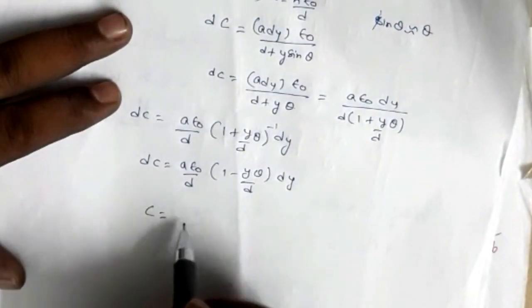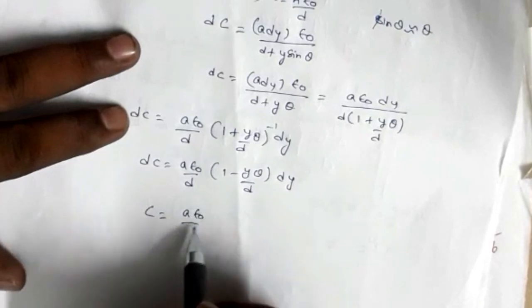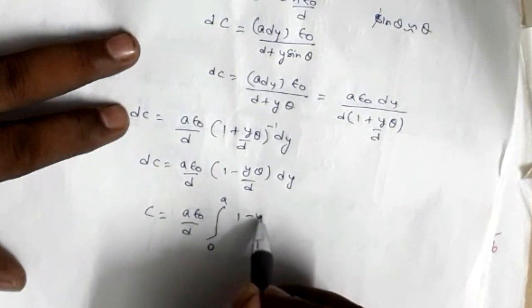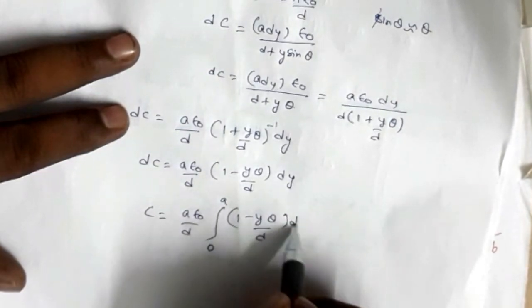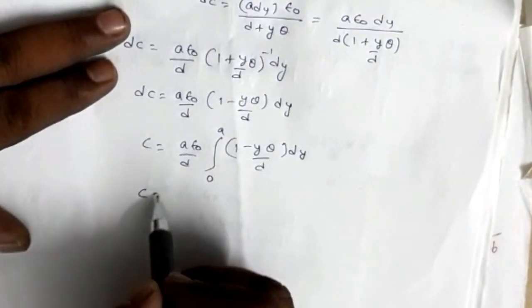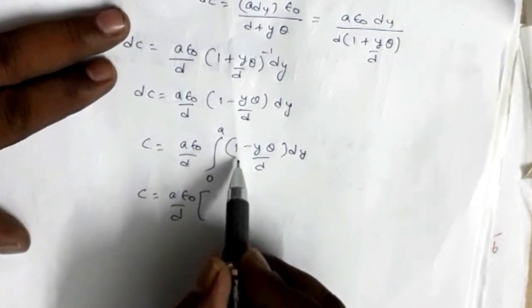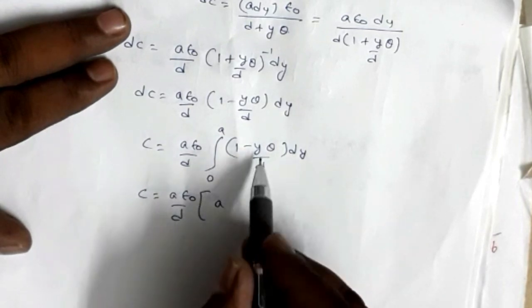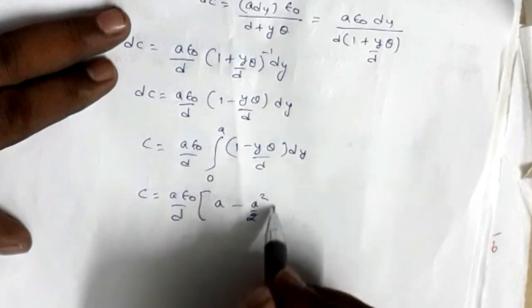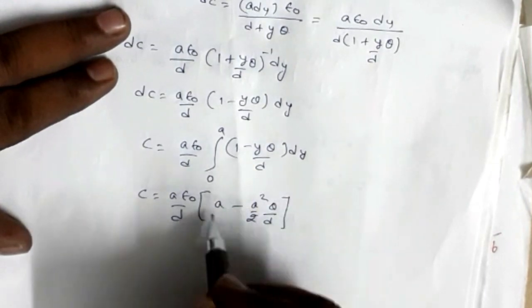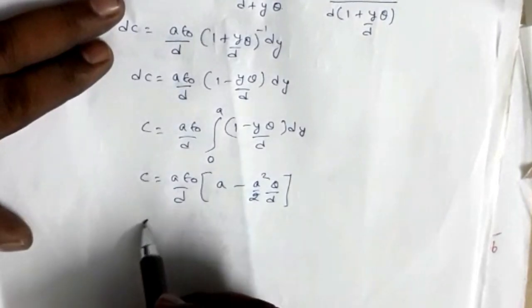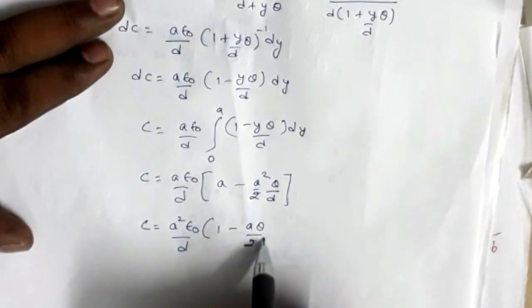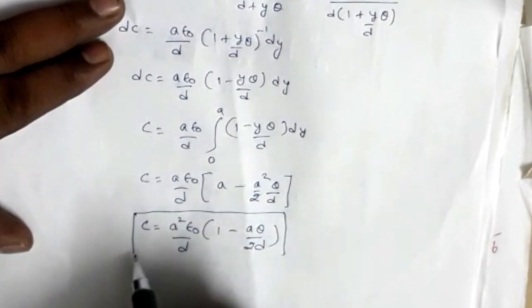Integrating from 0 to a: C = (a·ε₀/d) times the integral from 0 to a of (1 - yθ/d)dy. Evaluating this integral: the first term gives y and the second term gives y²/2, so we get a - a²θ/(2d). Taking a as common, this gives C = (a²·ε₀/d)·(1 - aθ/2d). This is the final expression for the capacitance.